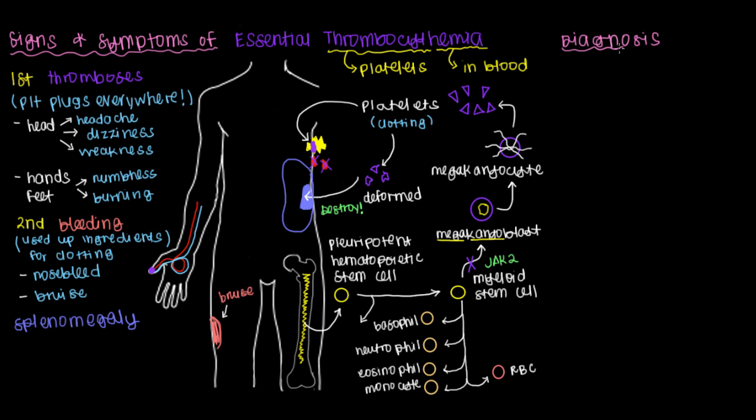But how do we diagnose it? While this isn't a first-line thing you'd look for, a slam dunk finding would be the presence of the JAK2 kinase mutation. But a more specific thing to look for is the number of platelets. If that number is greater than 450,000 for two or more months, then that's pretty suggestive. Essential thrombocytemia is a diagnosis of exclusion, which means you have to make sure other disorders aren't present.